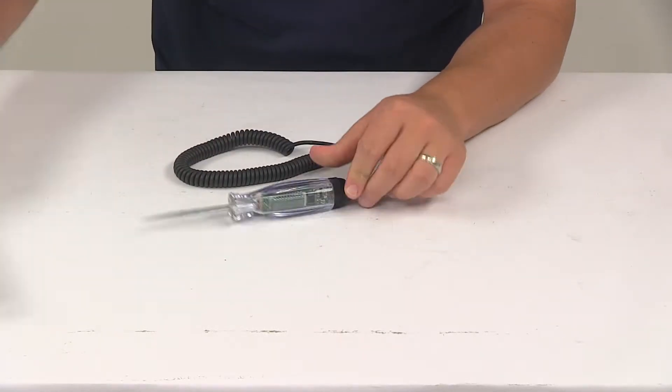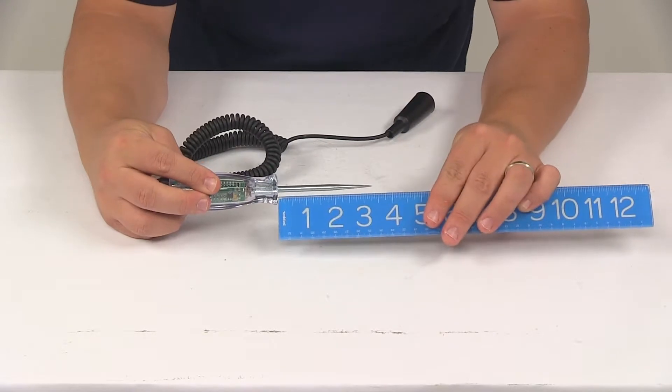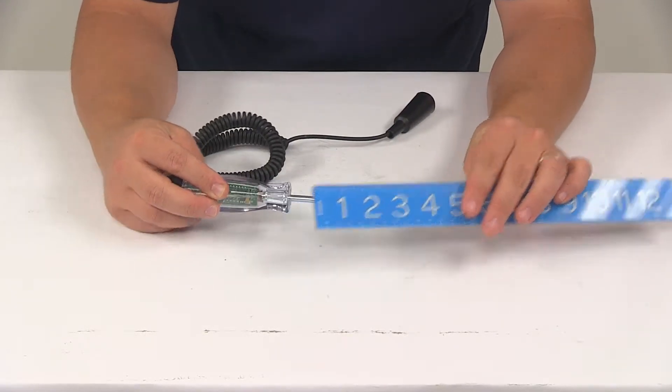The shank length, measuring just that probe right there, that's going to be about 3 and 3 eighths of an inch long.